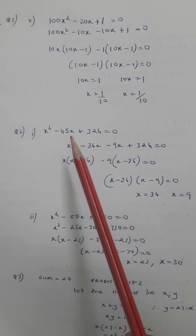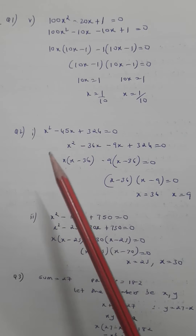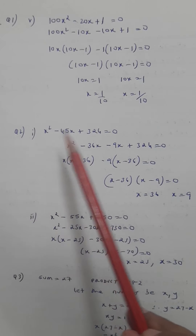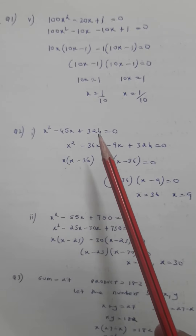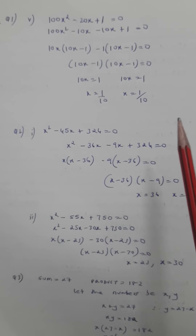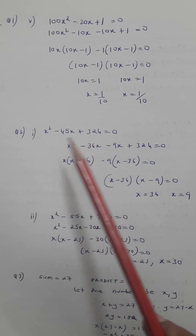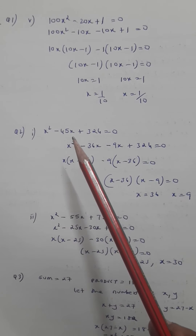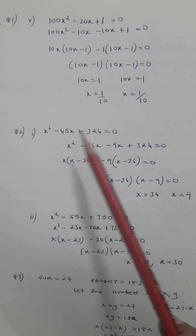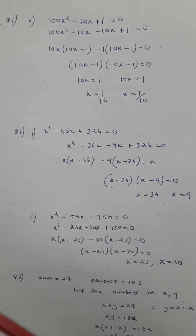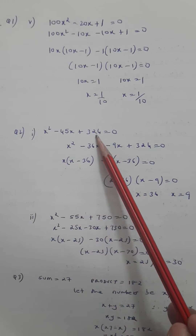Question number two asks us to look at the solved examples. They have already solved the word problems and left them at two equations for us to solve further. You need to read those word problems and go through the solved examples to understand how these equations were formed. We are asked to solve these two quadratic equations by splitting the middle term.